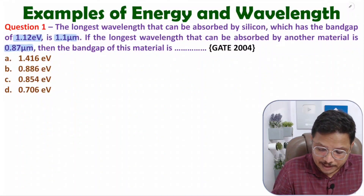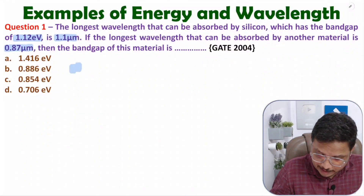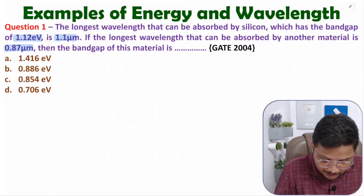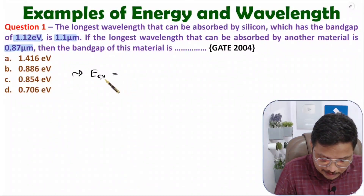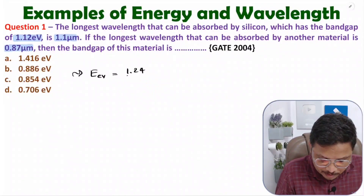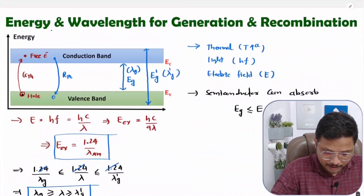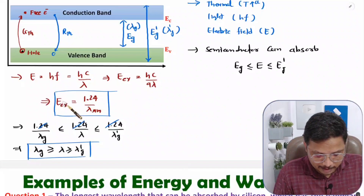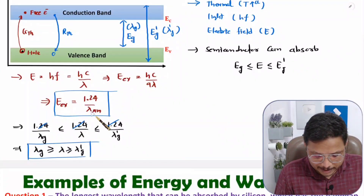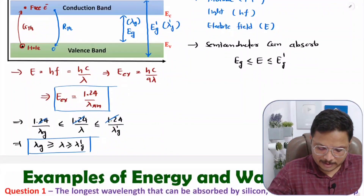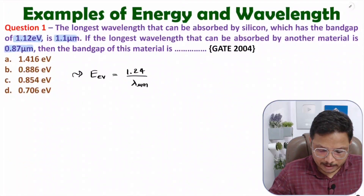In my last video, I explained that if you have energy in terms of electron volt, then the relation of energy with wavelength will be 1.24 divided by lambda, where lambda will be in terms of micrometer. Energy in terms of electron volt equals 1.24 divided by lambda in terms of micrometer. That is the formula I am going to use here.